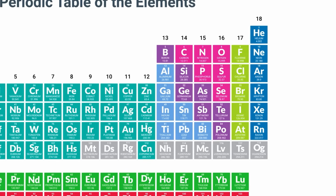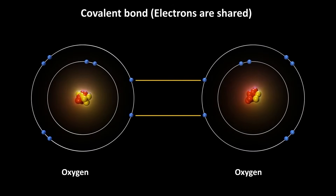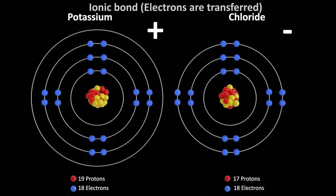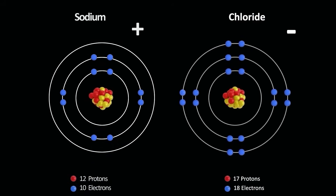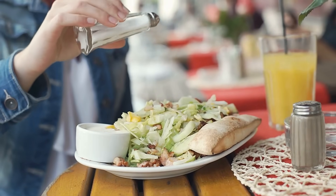Electrons are responsible for chemical bonding and play a fundamental role in interactions between atoms — by either sharing electrons, as in covalent bonds, or transferring them from one atom to another, as in ionic bonds. When atoms interact to form molecules, electrons from the different atoms rearrange themselves to lower the overall energy of the molecule, creating a more stable structure. In ionic bonding, electrons are transferred from one atom to another, creating ions, resulting in an electrostatic attraction between positive and negative ions, forming a stable structure like sodium chloride, NaCl — ordinary table salt.